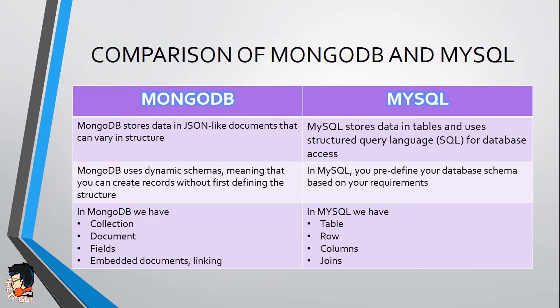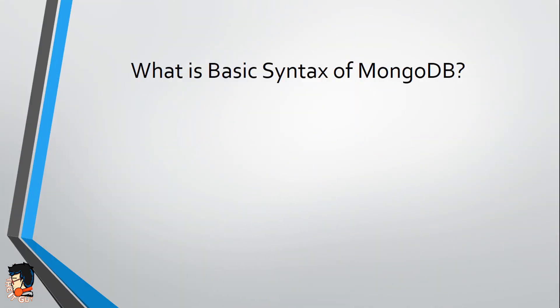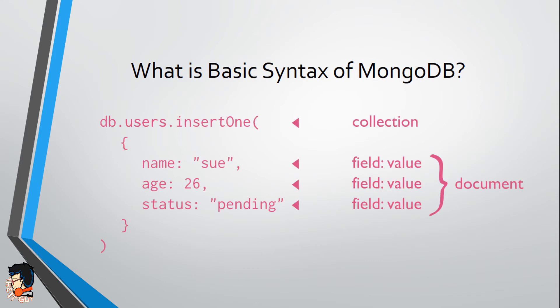In SQL what we have as tables, in MongoDB we have as collections. Rows become documents, columns become fields, and joins like inner join, outer join, natural join, equi join in MySQL — we have embedded documents and linking in MongoDB. Now let's see the basic syntax of MongoDB.